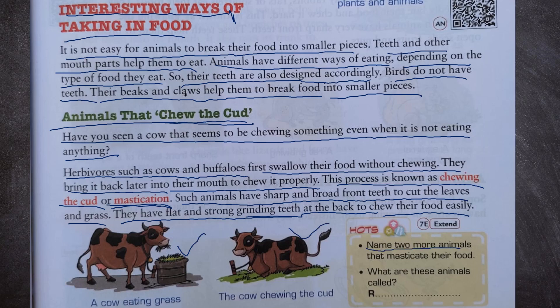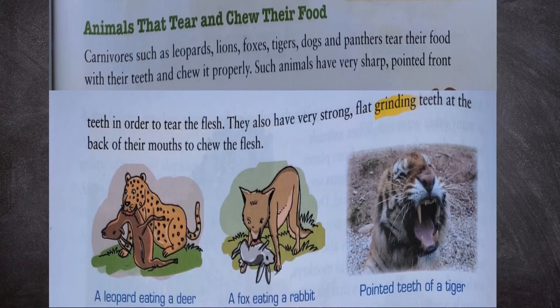Name two more animals that masticate their food. Goat and sheep are animals that masticate their food. What are these animals called? These animals are called ruminants — R-U-M-I-N-A-N-T-S.